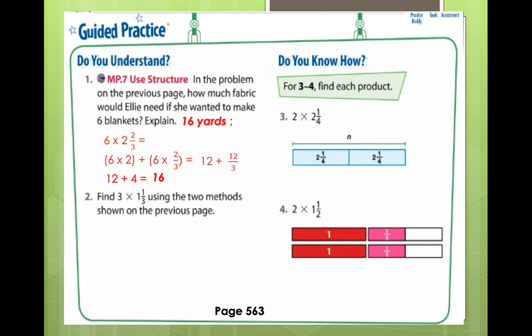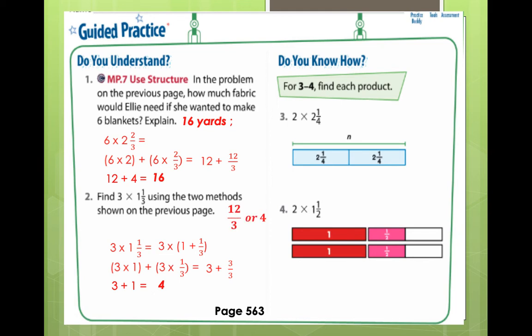Next, problem number 2: find 3 times 1 and 1 third using the two methods shown on the previous page. I'm going to show you one method and you have to do the other one. So, 3 times 1 and 1 third equals 3 times 1 plus 1 third. We decompose the mixed number. Then we apply the distributive property of multiplication: 3 times 1 plus 3 times 1 third, giving 3 plus 3 over 3. Since 3 over 3 equals 1, we add to 3: 3 plus 1 equals 4. So our answer is 4.